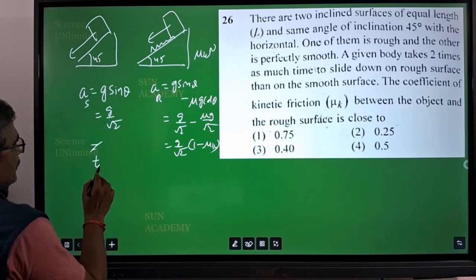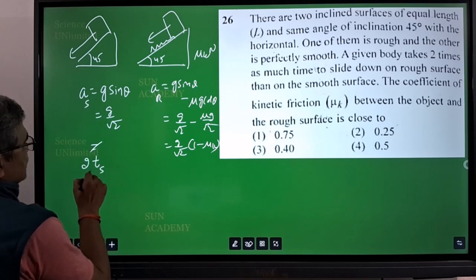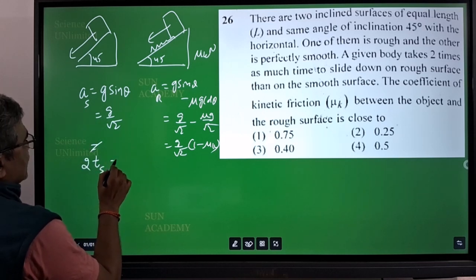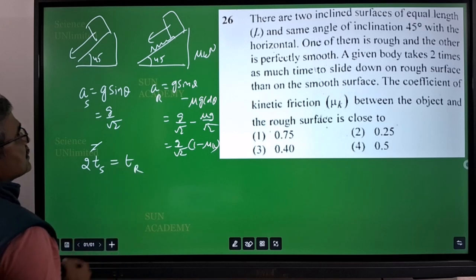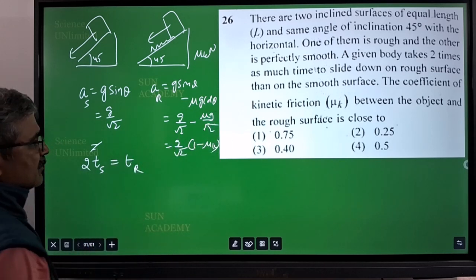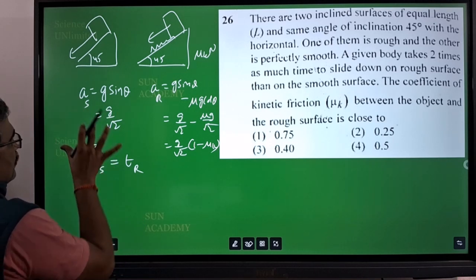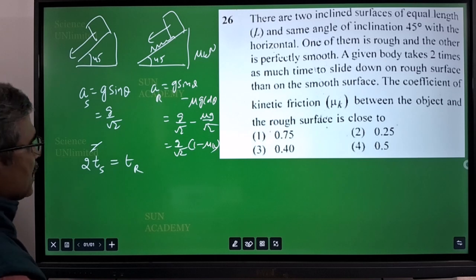We can take that time of sliding for the smooth surface is half of the time of rough surface. That is what it is given, time of rough surface is double than time of smooth surface. So if I get an equation based on these two, I can easily find μk.